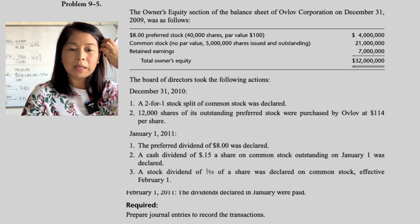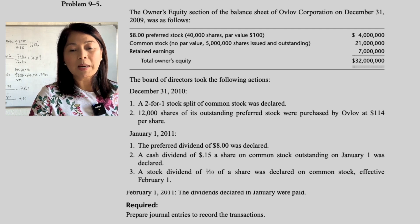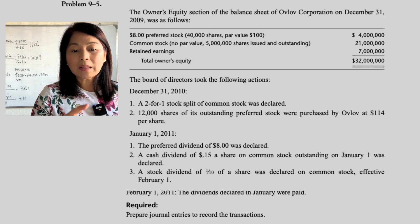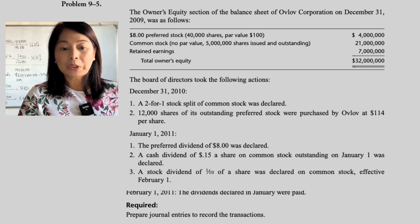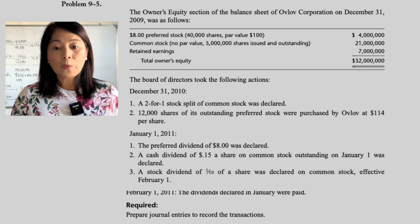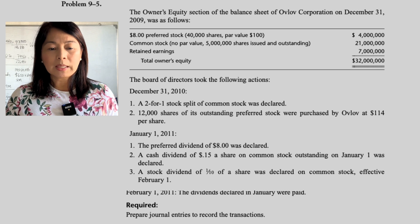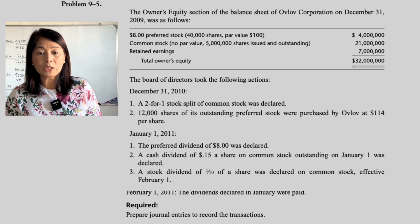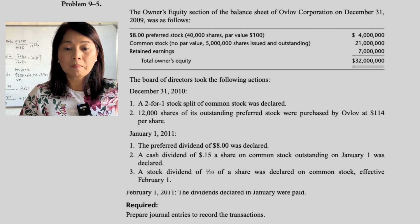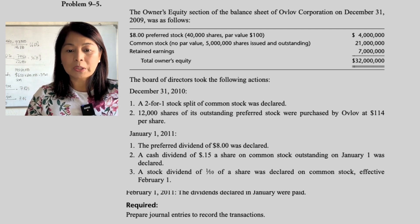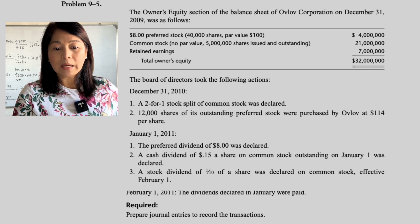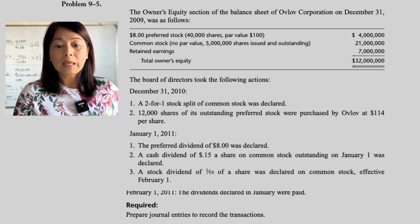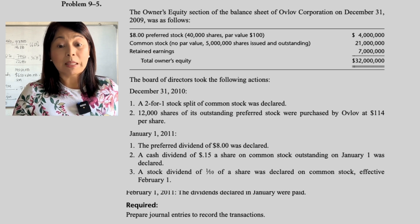Now let's go to Problem 9-5. The owner's equity section of the balance sheet of Oblog Corporation on December 31, 2009 was as follows: $8 preferred stock, 40,000 shares, par value $100, equivalent to $4 million. Common stock, no par value, 5 million shares issued and outstanding, valued at $21 million. Retained earnings $7 million; total owner's equity $32 million. The board declared a 2-for-1 stock split of common stock, so there are now 10 million shares outstanding.